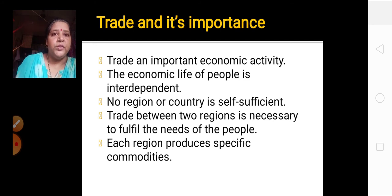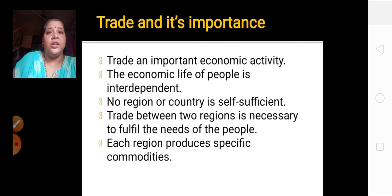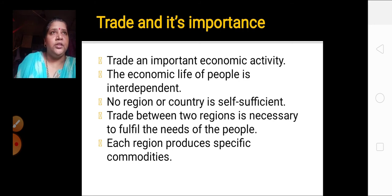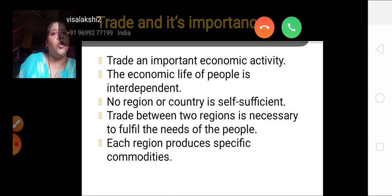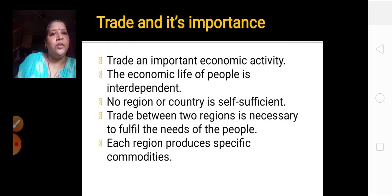Where there is less of something, somewhere it must be more — where it is more, they supply it to the area with less. No region or country is self-sufficient; none can claim they are self-sufficient in everything — they are always lacking something. Trade between two regions is necessary to fulfill the needs of the people. For example, a country may be very good in oil but may not have proper agriculture, so there is demand for agricultural goods.